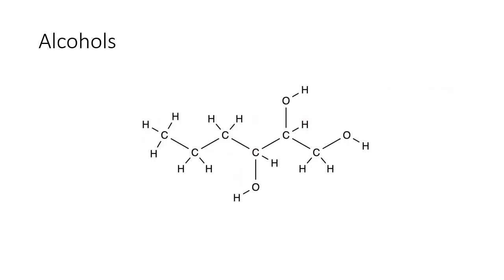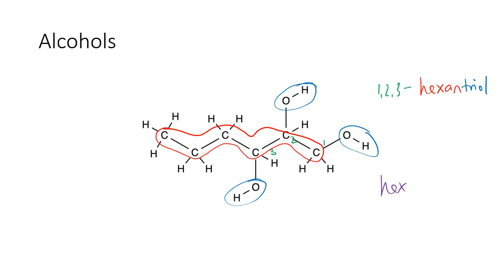Let's first of all identify the longest carbon chain. One two three four five six. Six carbons here. Six is hex. It's an alkane so it's a hexane. Let's find our hydroxyl groups or our alcohol groups. There's one here, there's one here, there's one here. Just like naming other suffixes if you've got more than one of them you've got to state that somehow. So this is hexane tri for three ol. This is the hexanetriol and where are these alcohol groups? They are number one two and three. So this is one two three hexanetriol, also known as hexane one two three triol.